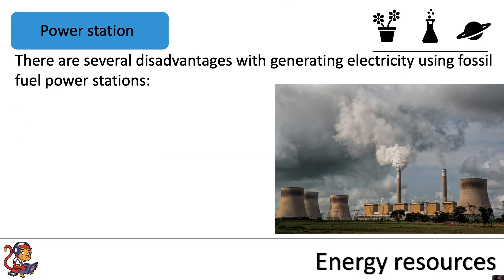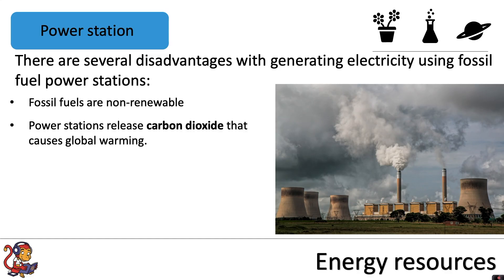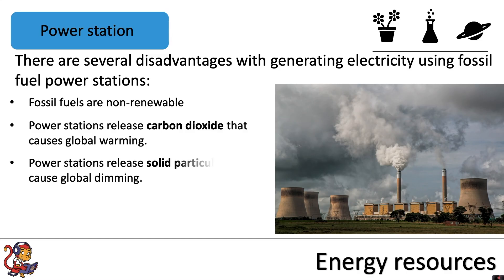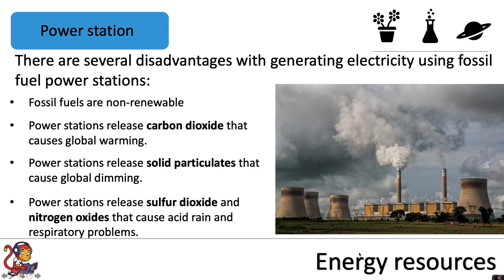There are several disadvantages with generating electricity using fossil fuel power stations. Fossil fuels are non-renewable, so they will run out. Power stations release carbon dioxide that causes global warming. Power stations release solid particulates that cause global dimming. And power stations can also release sulfur dioxide and nitrogen oxides that cause acid rain and respiratory problems.